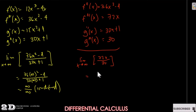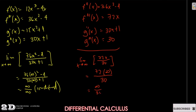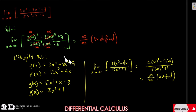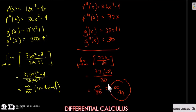Applying the limit with the third derivatives: the limit of 72x over 30 as x approaches infinity. Substituting gives 72 times infinity over 30, which equals infinity. Any number divided into infinity is still infinity. Therefore, the exact limit of this function is infinity, found by applying L'Hôpital's Rule up to the third derivative.